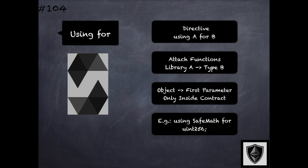For example, if this directive is used as shown here — saying using SafeMath for uint256 — it means that variables of type uint256 within that contract where this directive is used can have functions from the SafeMath library attached to them.